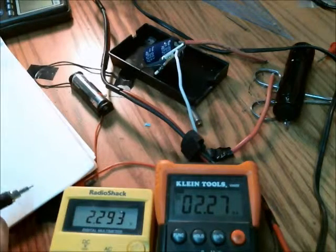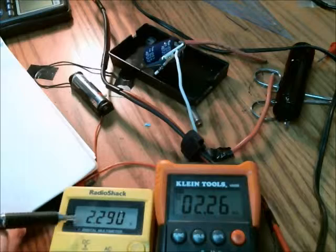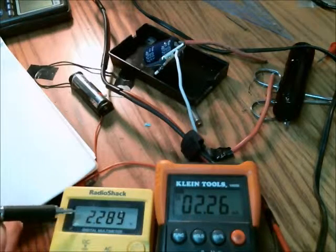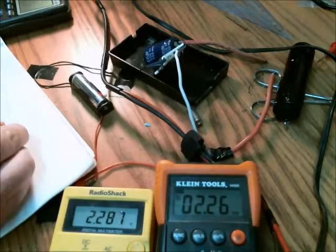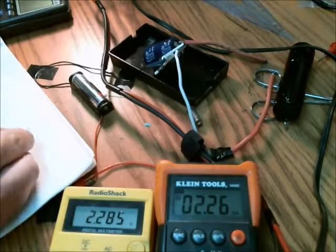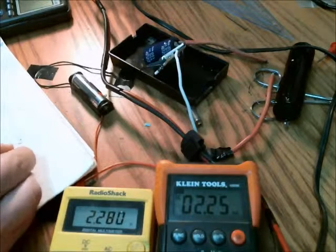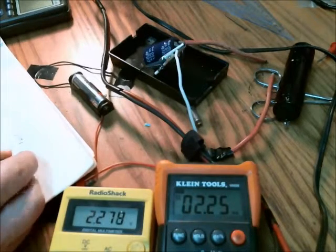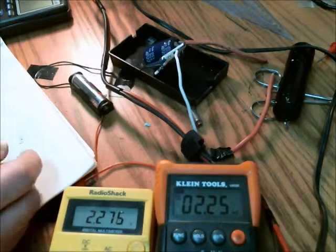Okay, so this is with a 75-watt tungsten lamp, and the voltage is 2.29 volts, and the current is 2.26 milliamps, well, 2.25.